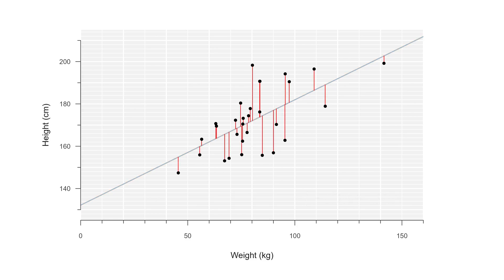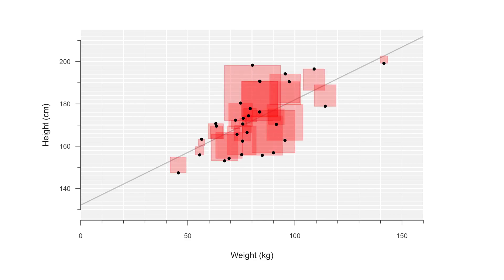This remainder, this difference between the actual outcome and that predicted by the model, is called the residual. The way the intercept and slope are estimated is by minimizing the residuals, or more precisely, by minimizing the sum of squared residuals, called ordinary least squares.